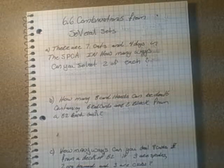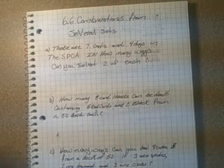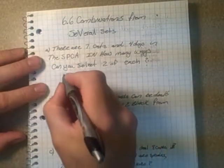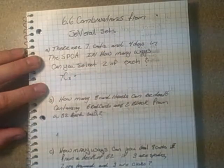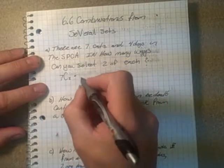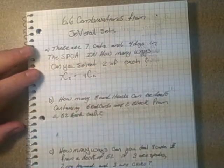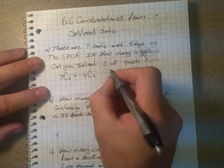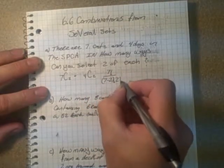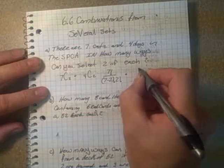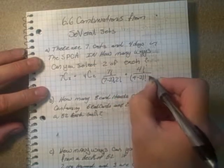There are seven cats and four dogs in the SPCA. In how many ways can you select two of each? You're going to select two cats and two dogs, so that means you're going to have 7C2 for the cats. And you're also going to use the counting principle, so you're going to multiply that by 4C2 for the dogs. Now if you write this out, it's 7 factorial over 7 minus 2 factorial, 2 factorial times 4 factorial over 4 minus 2 factorial times 2 factorial.